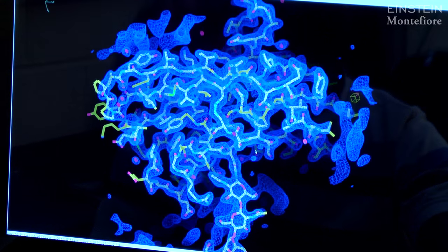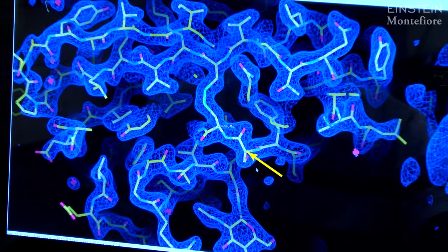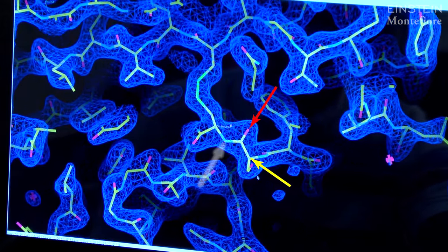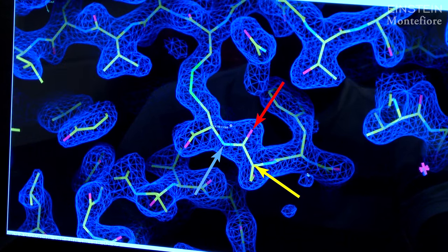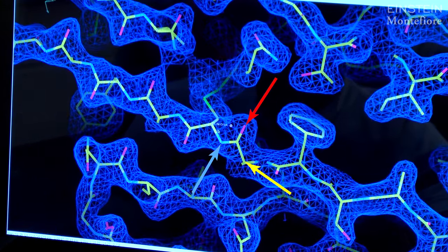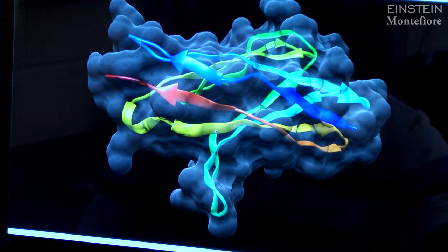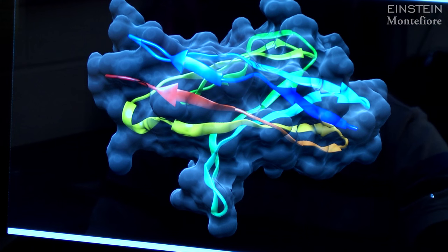If you zoom in, you can see in yellow the carbon atoms, in red oxygen, and in blue the nitrogen atoms, giving you exquisite detail about the position of every specific atom in this protein. If you now zoom out, you basically get the overall shape of this molecule.